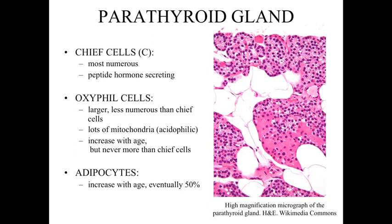Within the parathyroid gland, we're going to have three types of cells. The chief cells are going to be the most numerous cells — these are peptide hormone-secreting cells, so they're going to have slightly basophilic cytoplasm, rough endoplasmic reticulum, and Golgi apparatus. We're also going to have oxaphil cells, which are larger, pinkish cells scattered throughout the slide. The oxaphil cells are larger and less numerous than the chief cells, but they're going to be acidophilic because they have a lot of mitochondria.